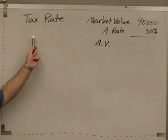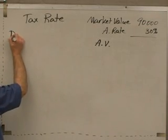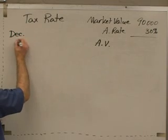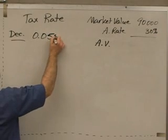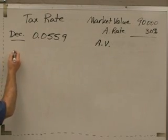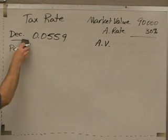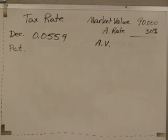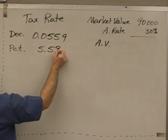Let's talk about the different ways that we can express a tax rate. First of all, we can express a tax rate as a decimal. We had an earlier problem where the tax rate was 0.0559. That's one way to express the tax rate. To change a decimal to a percent, we move the decimal two places to the right and stick a percent sign after it. So as a percent, this is 5.59%.